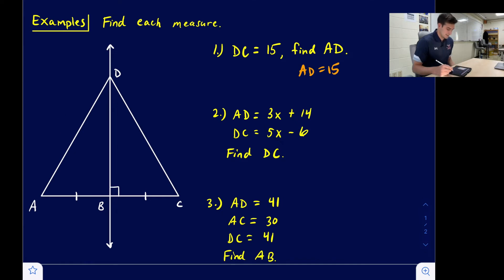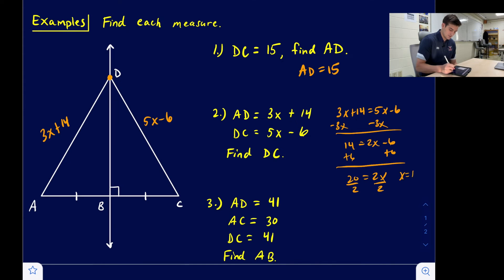Question two says AD equals 3x plus 14 and DC equals 5x minus 6. Find DC. So we know that these two segments are equal to each other because they lie on the perpendicular bisector. So we can set these two equations equal to each other: 3x plus 14 equals 5x minus 6. If I subtract 3x, we get 14 equals 2x minus 6. We can add 6 to get 20 equals 2x, and we divide by 2 and we get x equals 10.